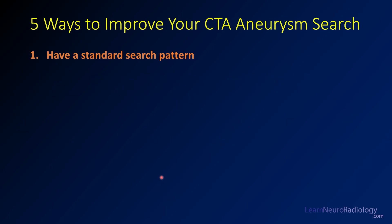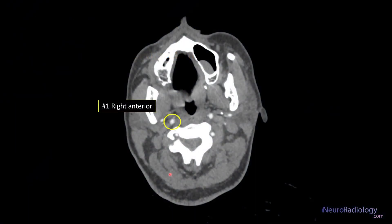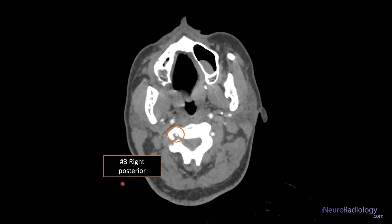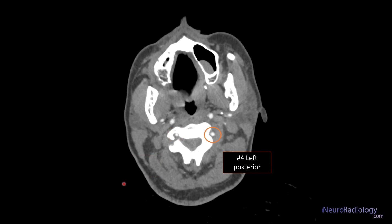Step number one: have a standard search pattern. This is really important — you want to be doing the same thing every time. If you do it hundreds, thousands of times, you're going to get better. I start anteriorly and then move from right to left, then move to posterior. I start with the right anterior circulation, such as the internal carotid, follow it up, then move to the left internal carotid, follow that up intracranially, then move posteriorly to the right vertebral artery and right posterior circulation, and then the left posterior circulation and left vertebral artery — in that pattern every single time.